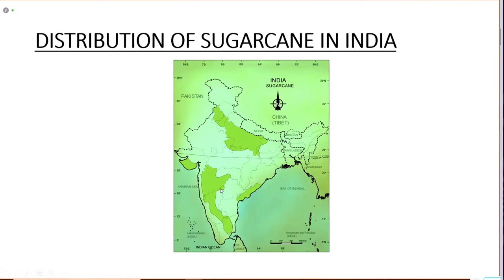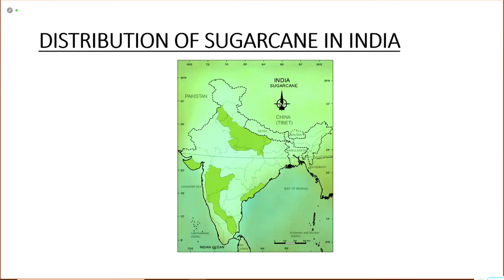A good question: why are sugar industries mostly in south India? Sugar cane is grown in northern as well as southern parts of India, but the southern part has comparatively lower temperatures than the northern part. Industries are located closer to the sugar cane fields so that less juicy content is lost during transportation. The climatic conditions are also more favorable in the southern part, so most industries are located there.